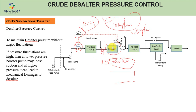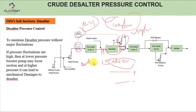If we don't control the desalter pressure, high pressure fluctuations can cause the booster pump to lose suction at lower pressure. At higher pressure, it can lead to mechanical damage to equipment — if excessive pressure reaches the desalter, the internals can be damaged. So that covers the control philosophy of the desalter: level control and pressure control. That's all for today — if you have any doubts, please comment in the comment box and I will try to clarify. Thank you so much.